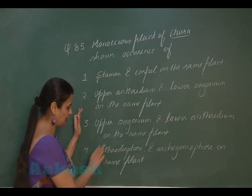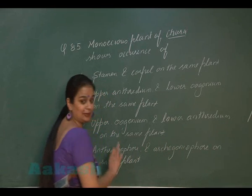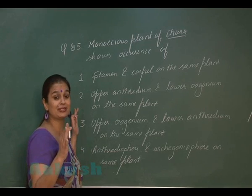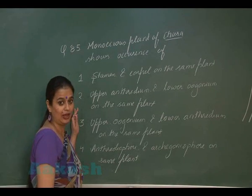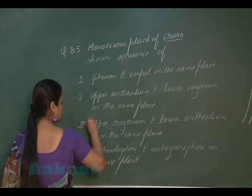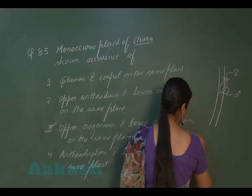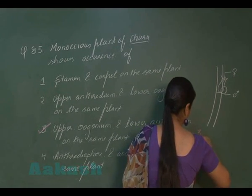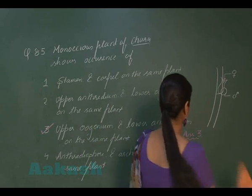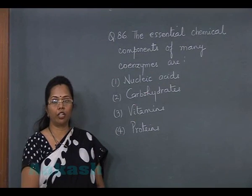The fourth option mentions 3-4 antheridia and archegonia on the same plant — but antheridia and archegonia are present in Marchantia and they are on different plant bodies. So the correct answer for question 85 is option 3.